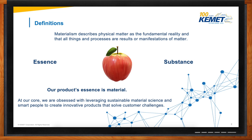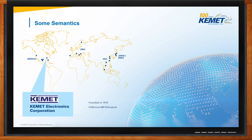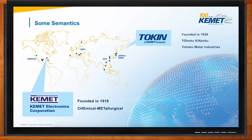How does this relate to Kemet? Let's continue with a bit of semantics. Kemet was founded 100 years ago. More importantly, it means chemical, metallurgical. And our location in Japan is called Tokin, which means Tohoku Kinzoku — metals from the north.